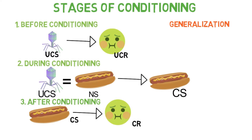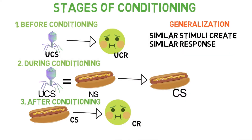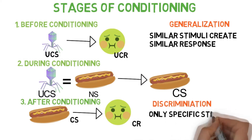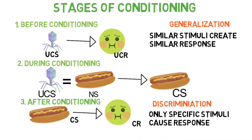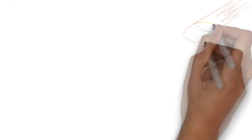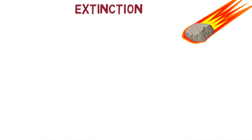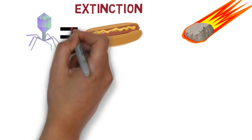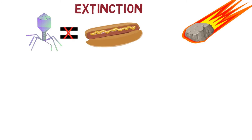Your nausea may extend to other similar stimuli such as sausages, which is known as generalization. If the reaction is solely to hot dogs, it is known as discrimination. What we've covered mainly deals with the acquisition of the association, but you can unlearn it as well. Extinction happens in classical conditioning when the unconditioned stimulus is no longer paired to the conditioned stimulus — you want to stop the virus from being associated with the hot dog. You can eat a hot dog every so often; you'll feel nauseated the first few times, but because you don't have the stomach bug in your system, you'll eventually unpair the association.